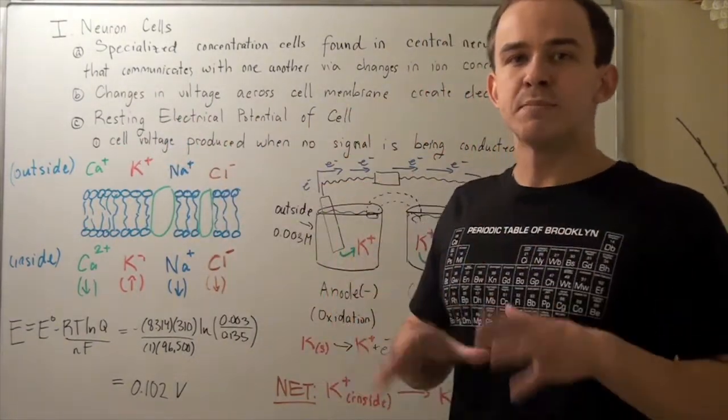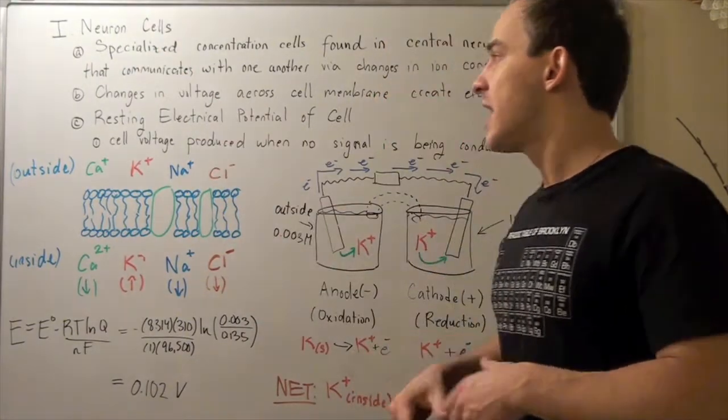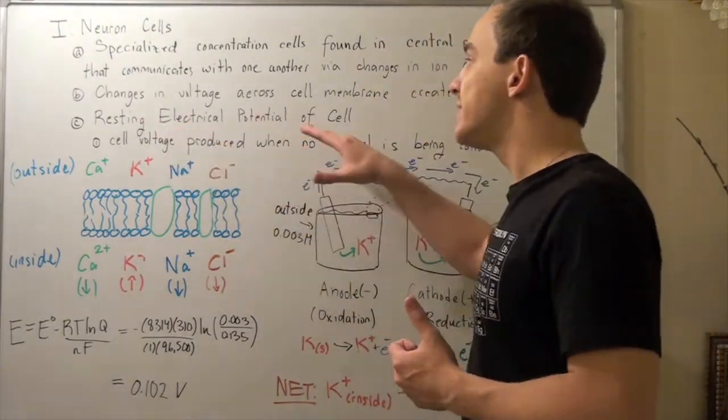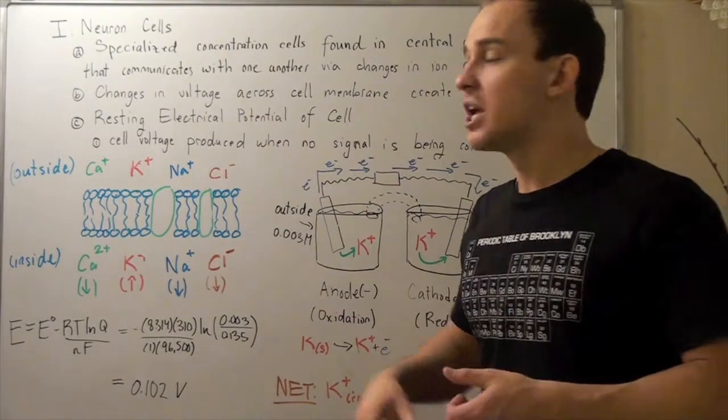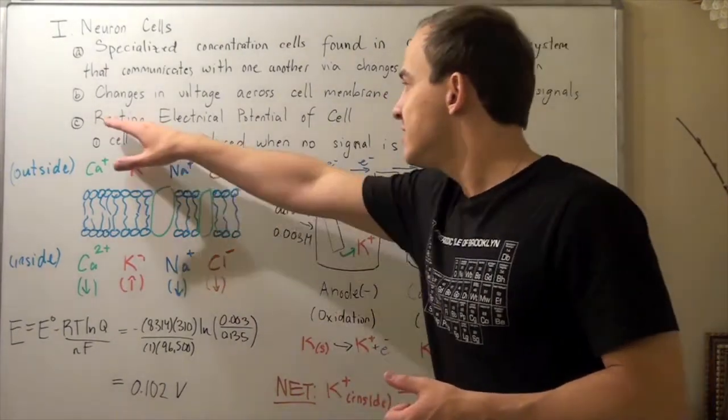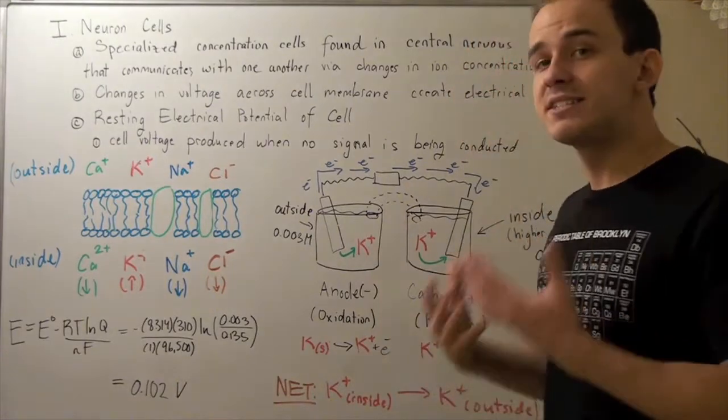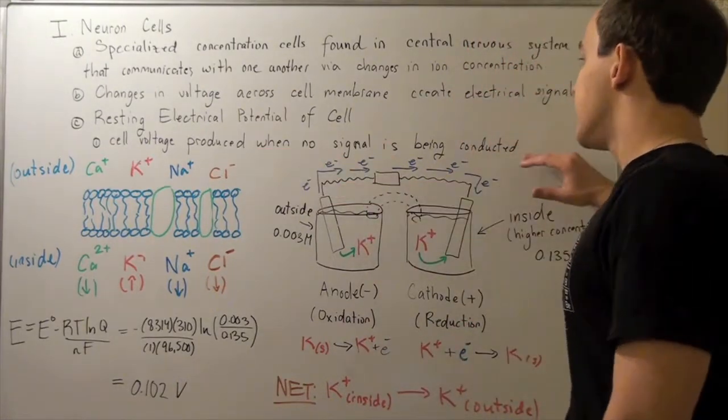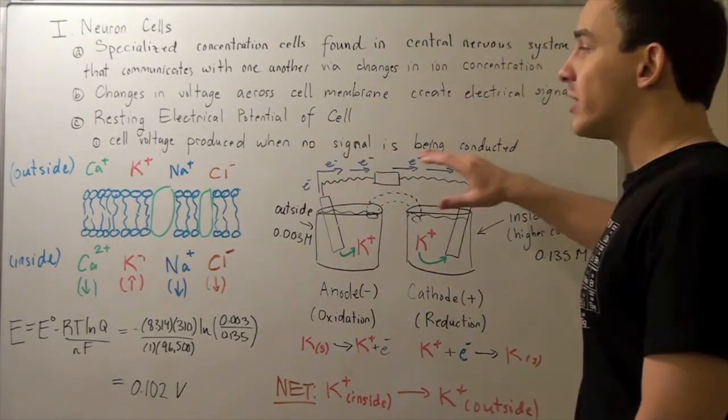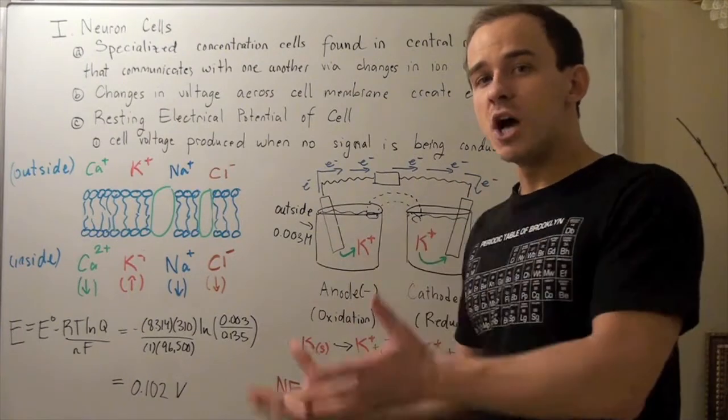Our cells within our body, specifically neuron cells, establish electrical potentials or cell voltages at rest. And what this simply means is the cell voltage produced by our cell when no signals are being transducted or conducted from one cell to another.